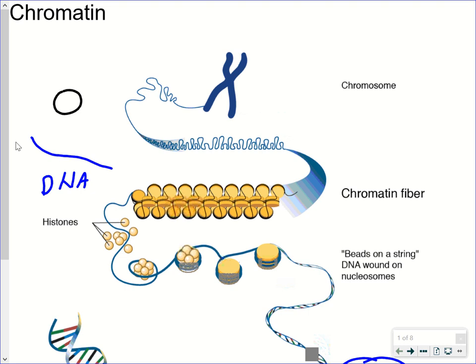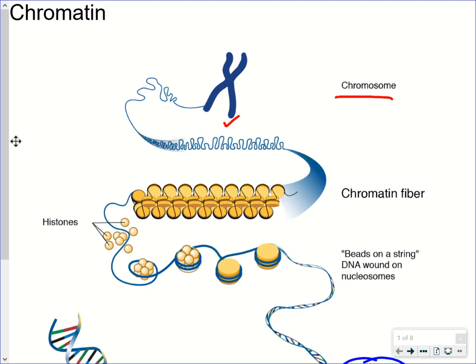The term chromatin refers specifically to the structure of DNA when a cell is not dividing. The X-shaped structure we see labeled as a chromosome is not seen very often — it's only visible with a light microscope when a cell is dividing. The rest of the time, when a cell is carrying out its normal daily activities during interphase, the chromosomes are not condensed.